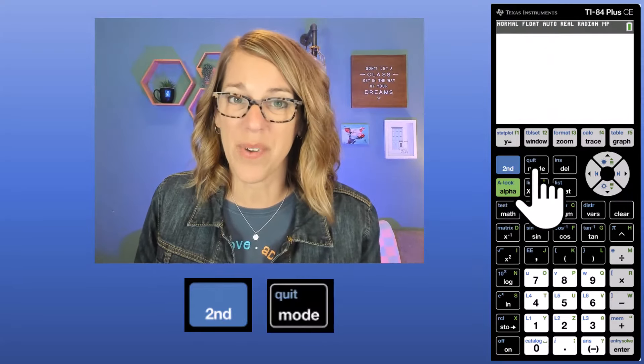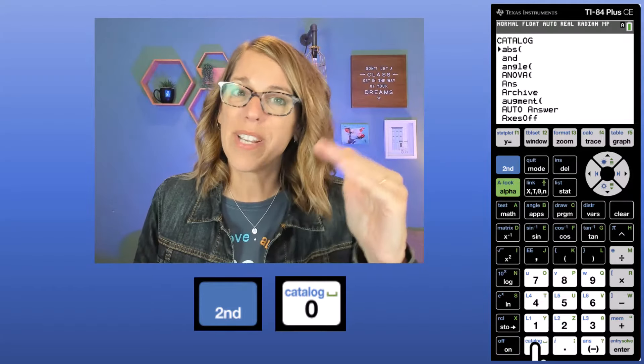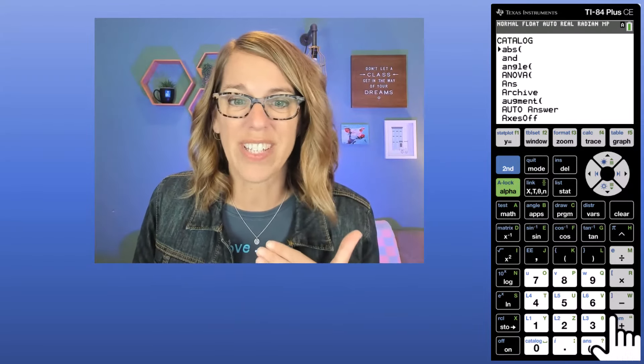If yours didn't have this option, let's do it through the catalog. I'm going to quit here by doing second, followed by quit, and then I want to go to my catalog. Now on my calculator, it's located on the zero key, so I'm going to hit second, followed by zero, and it brings up all of the calculator's functions in alphabetical order.